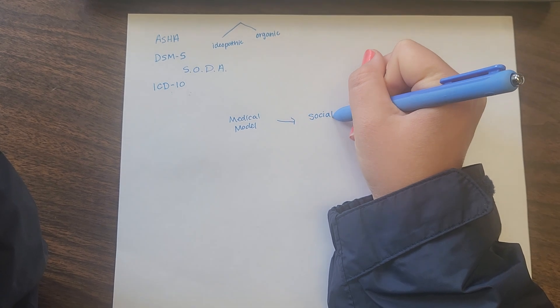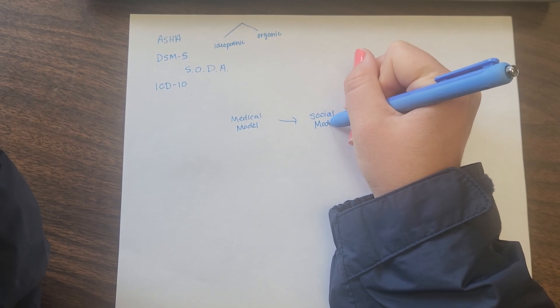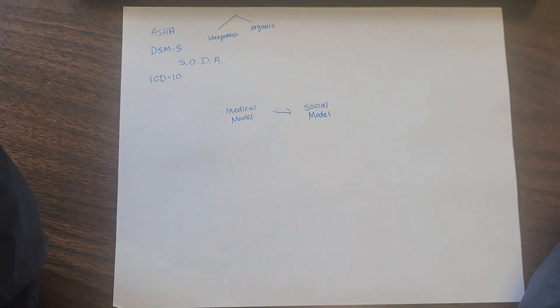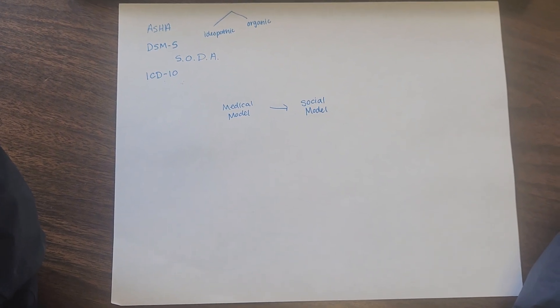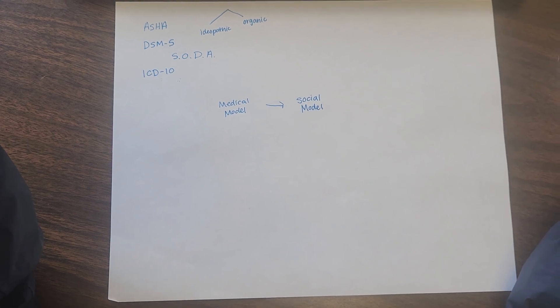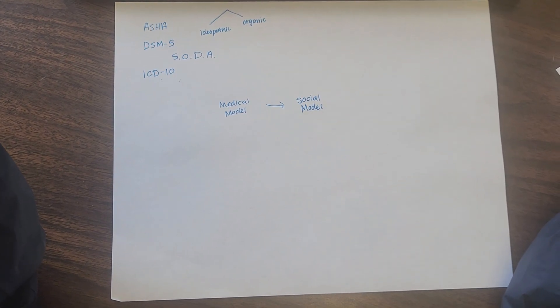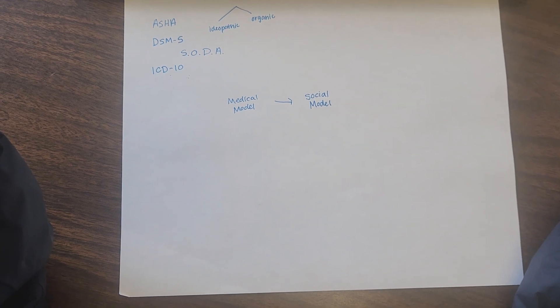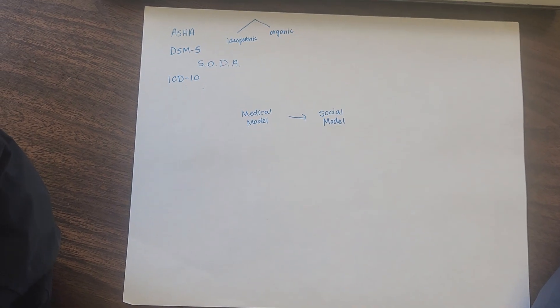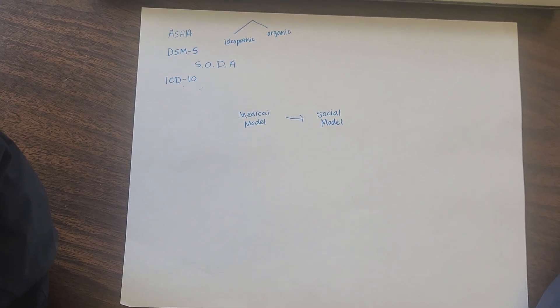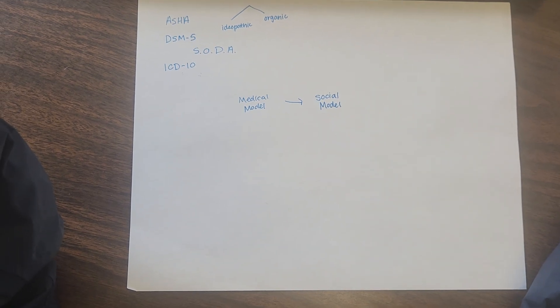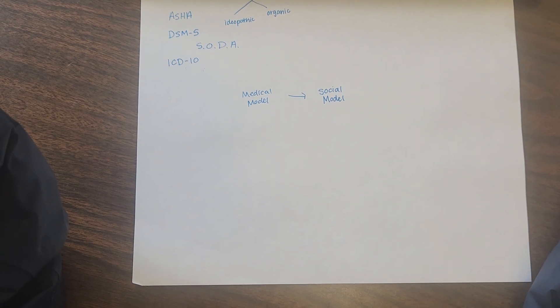So we've moved away from that model for a lot of reasons to what we call a social model. And a social model is different because it recognizes no matter the severity of the underlying diagnosis, you can have impacts on your daily life. So you can have an impact on your ability to go to school or go to work. It can impact your ability to interact socially with others. And so somebody who has even a mild disorder can have a pretty large impact on their day-to-day life.